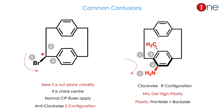Now let us see common confusions and mistakes. If bromine is attached on the side chain rather than on the benzene ring, it becomes a normal chiral center with normal CIP rules — there is no plane chirality. In this case: bromine has highest priority, the substituted carbon has second, the long chain third, and hydrogen is at the back. The arrangement is anti-clockwise, giving S configuration.